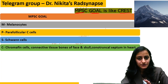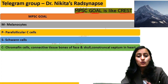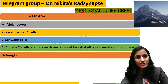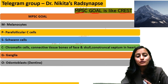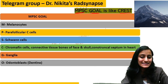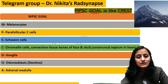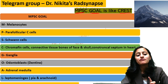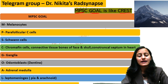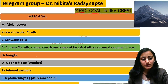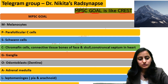Now, what does GOAL stand for? G is for ganglia, O for odontoblasts (that is dentine-forming cells), A for adrenal medulla, and L for leptomeninges — that is, pia and arachnoid.